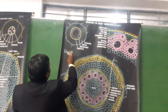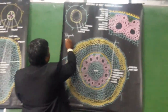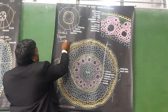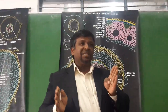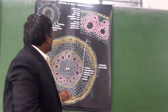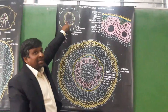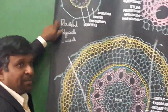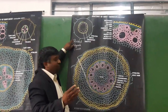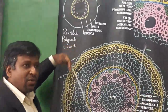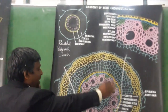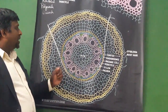Apart from being polyarch, the monocot root stele is also exarch and radial vascular bundle. It is called radial because xylem and phloem are not present together — they are present on separate radii. In the ground plan, you can notice many patches of xylem alternating with many patches of phloem, giving the radial vascular polyarch condition. It is exarch because proto-xylem is towards the endodermis and meta-xylem is towards the pith. When we enlarge and observe under the microscope, we can notice the cellular details.